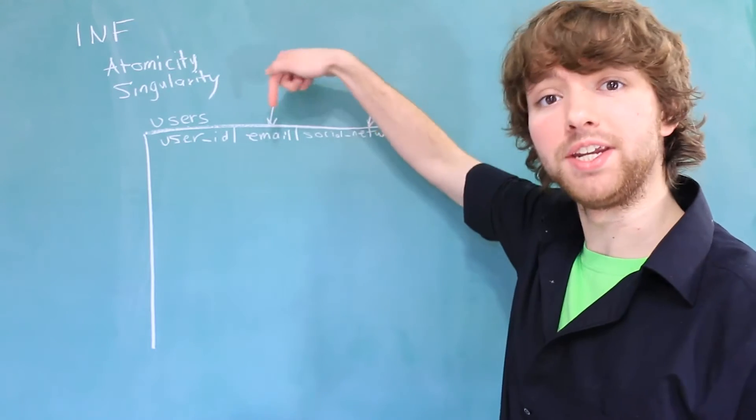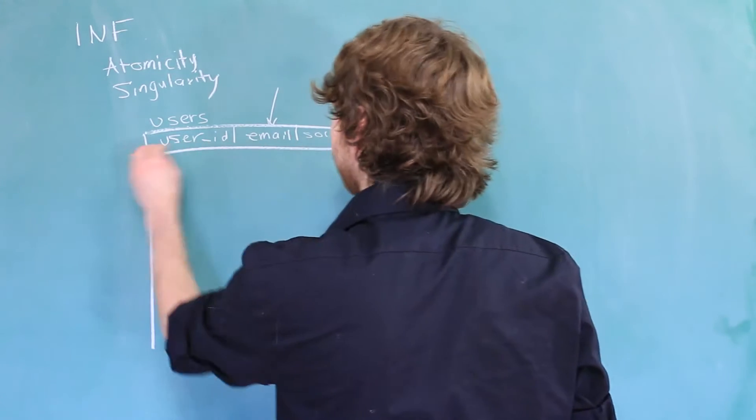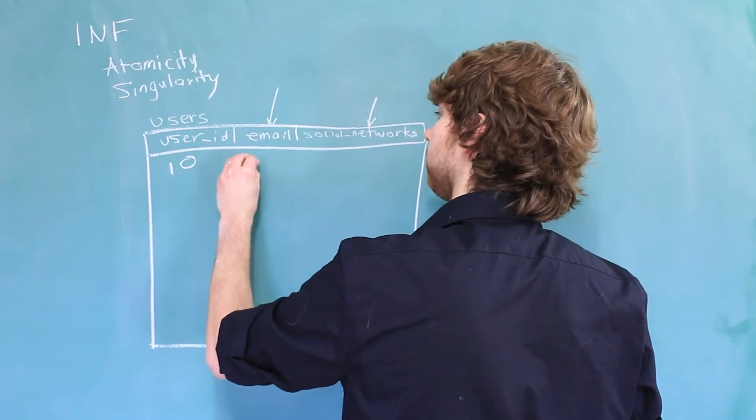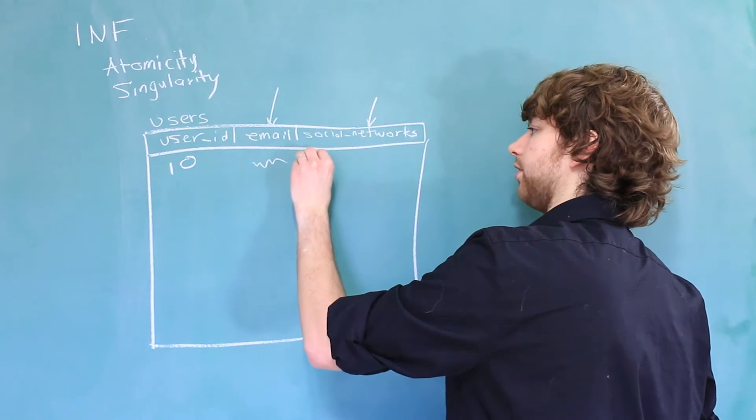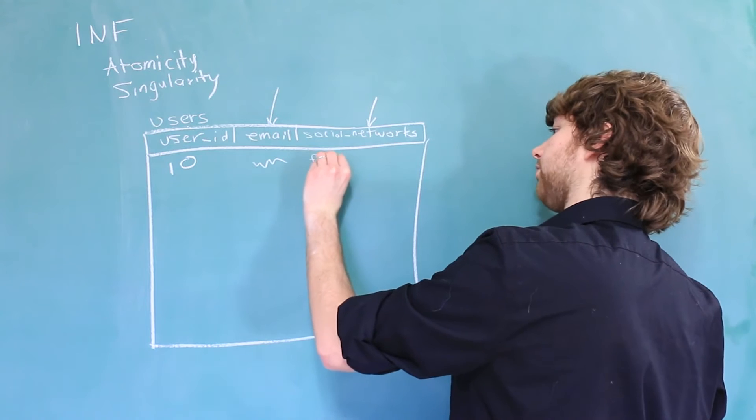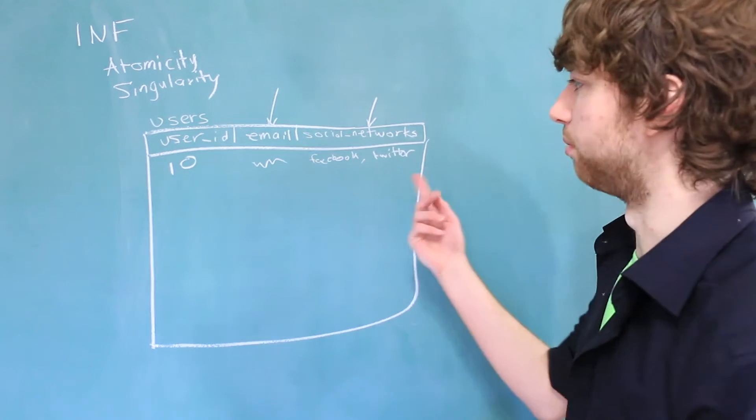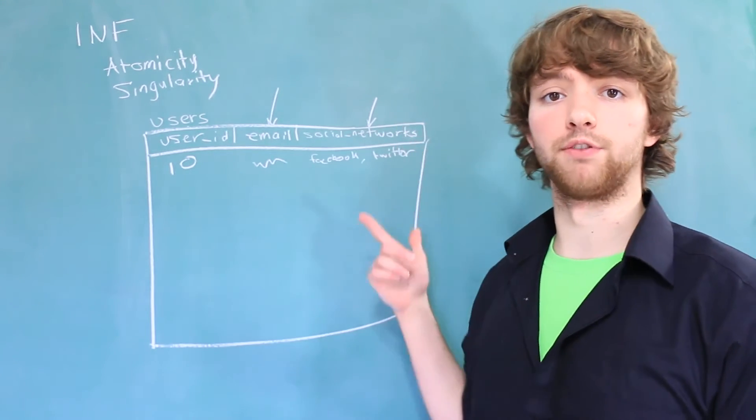So one email. In this situation, how would you put data in here? Well, you might have a User ID of, let's say, 10, an email, and then you could put your social network links on here. So you could say, you know, Facebook, comma, Twitter. But this is not single because we have two values for that column, which is breaking first normal form.